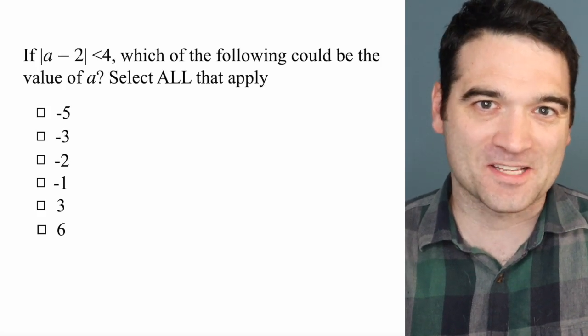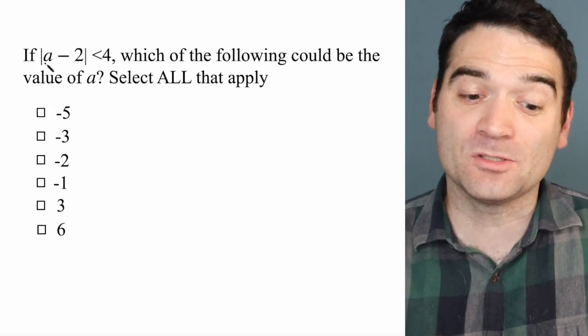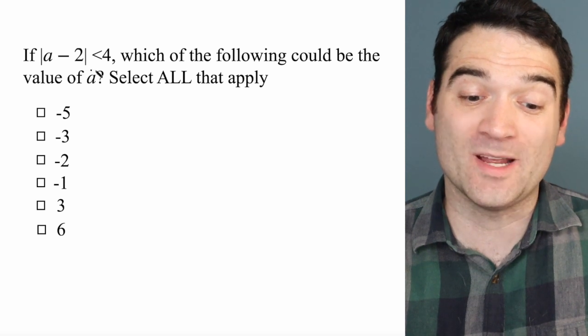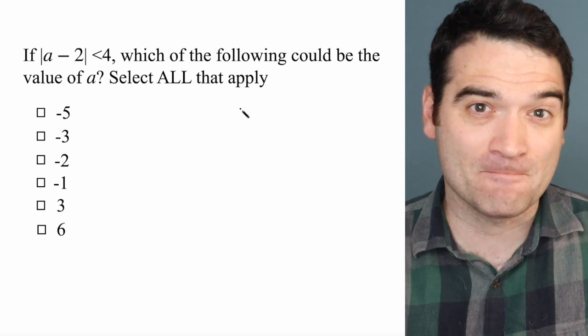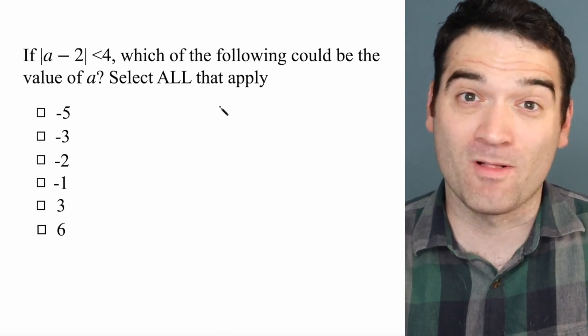Here's a GRE algebra question. Let's take a look. If the absolute value of A minus 2 is less than 4, which of the following could be the value of A? And we're going to select all that apply.